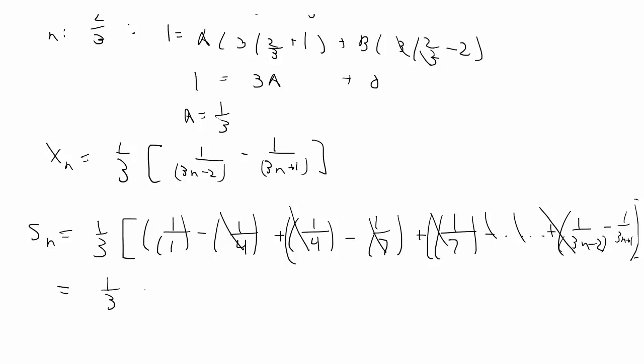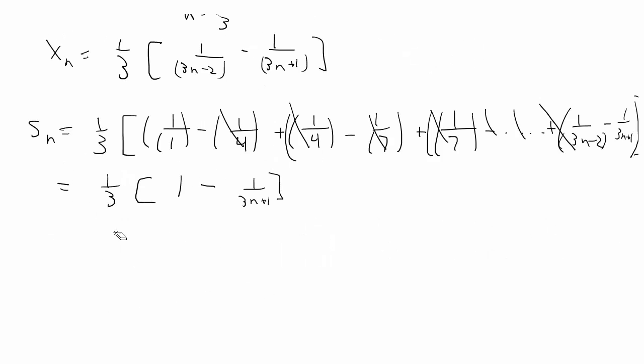That will equal 1/3 times [1 minus 1 over (3n plus 1)]. If we take the limit of the last remaining terms, we'll be finding the limit of the series. We take the limit of the partial sums to infinity, and that's going to be the limit of all of this, which when we simplify is going to give us just 1/3.